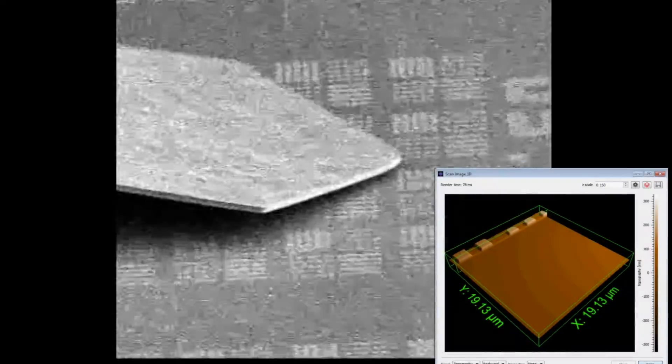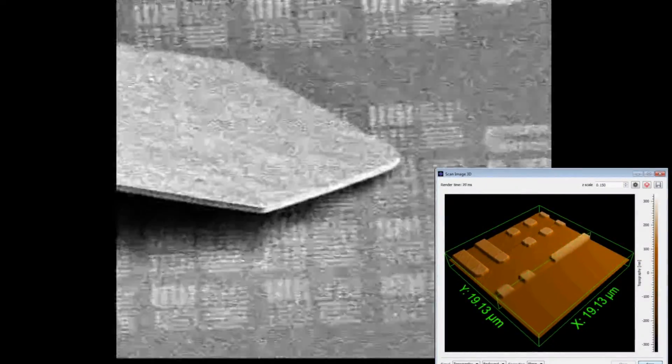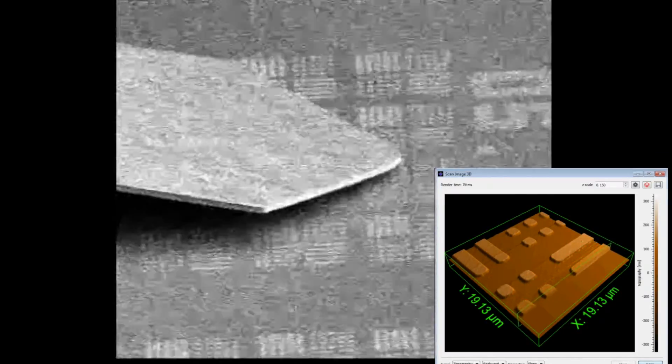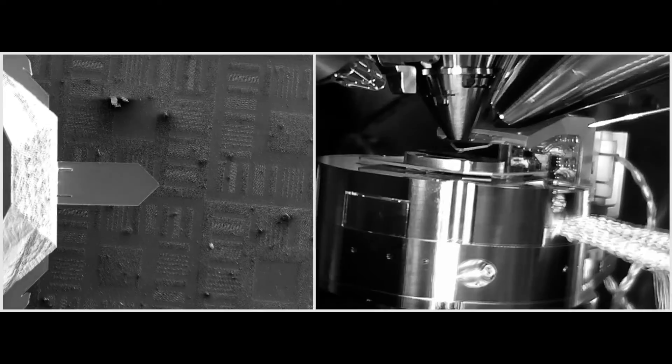We can collect different data from the AFM system like topography, amplitude, phase, frequency shift, error and overlap them on the images coming from the SEM.